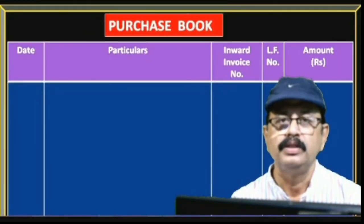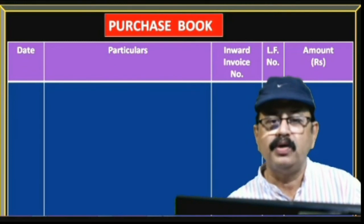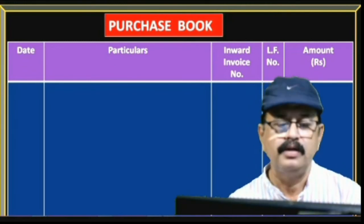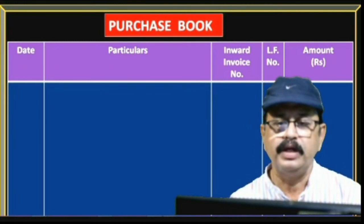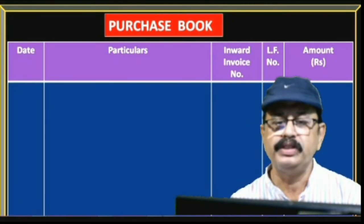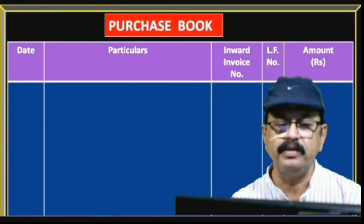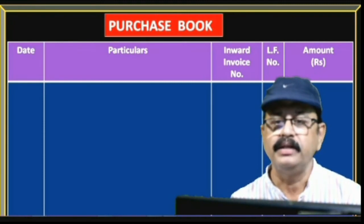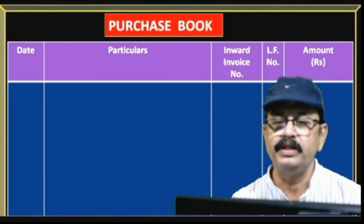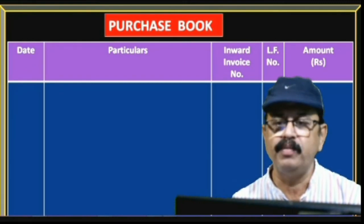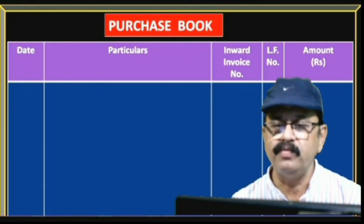See the format of the purchase book on the screen. There are five columns: the first column is date, the second column is particulars, the third column is inward invoice number, the fourth column is LF number, and the fifth column is amount.